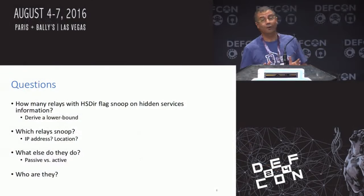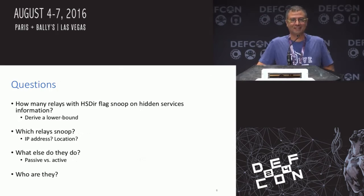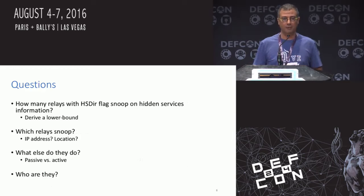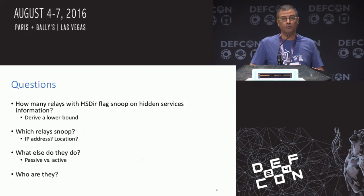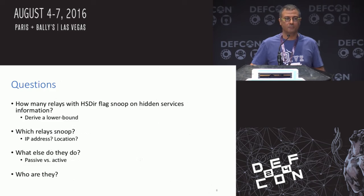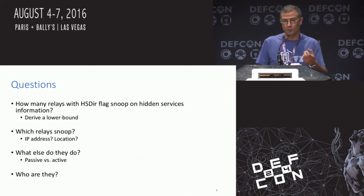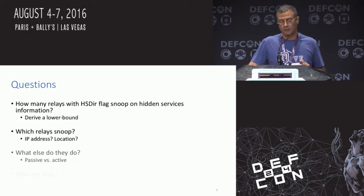The questions we try to address — there are four of them. The first is: how many of the Tor relays are misbehaving in the sense I defined? Second: which ones are snooping, trying to find out information they're not supposed to collect? Third: what do they really do — are they just collecting information, do they try to attack, are they aggressive? And the last one: who are they really, beyond just relay IP addresses? We have addressed mostly the first two questions, and a little bit of the third. Who they really are — that we didn't fully solve, and this might be a nice challenge for the community.